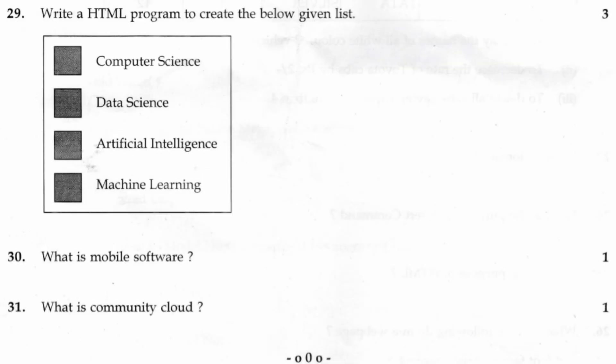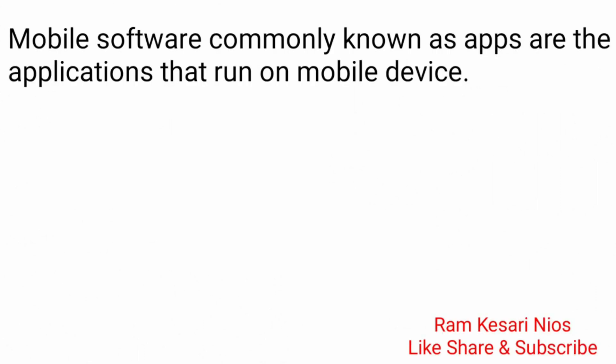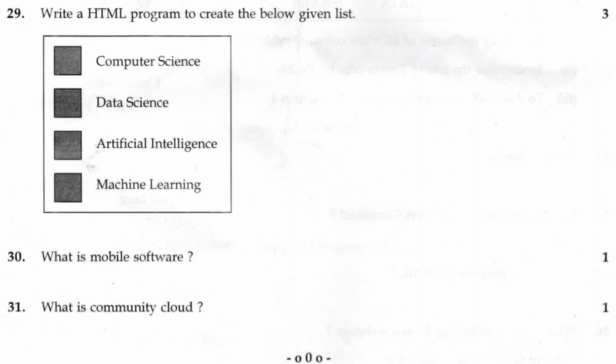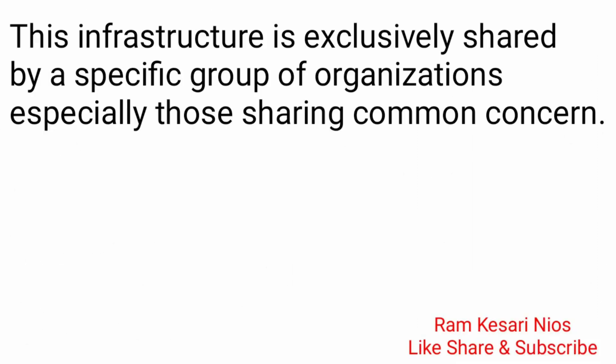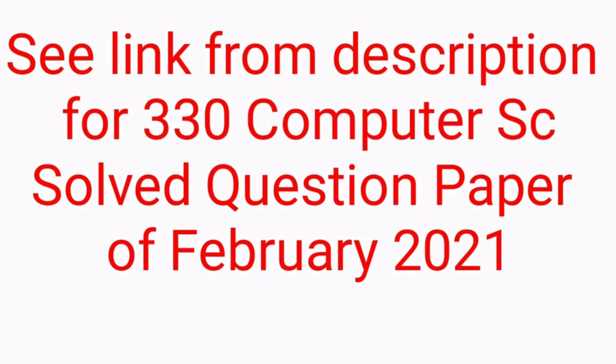Question 30: What is mobile software? Mobile software, commonly known as an app, are the applications that run on a mobile device. Question 31: What is community cloud? This infrastructure is exclusively shared by a specific group of organizations, especially those sharing a common concern. See link from description for 330 Computer Science Solved Question Paper of February 2021.